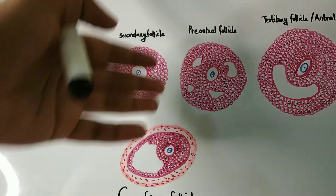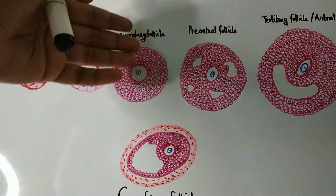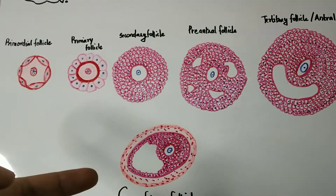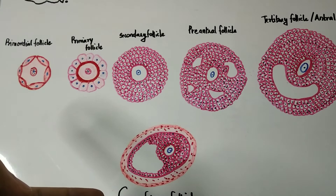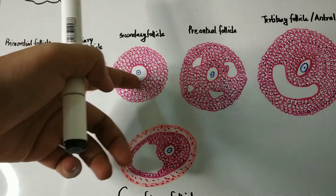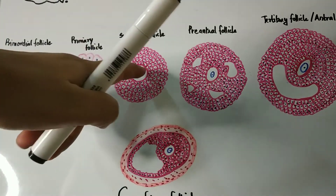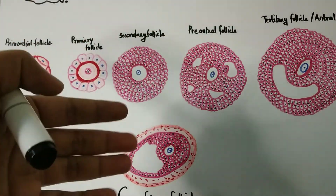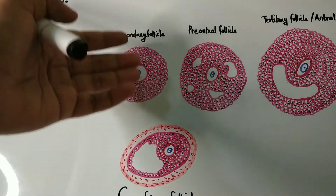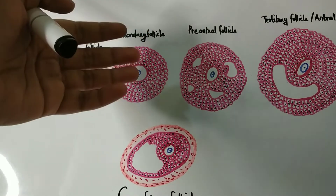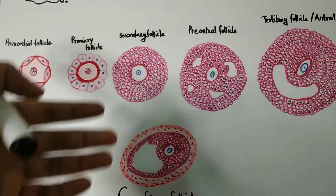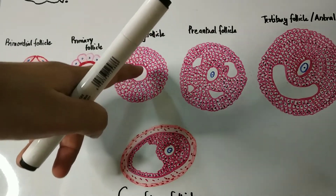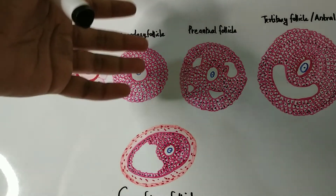In secondary follicles, more and more layers of granulosa cells are formed as the follicular cells undergo mitotic division. This is also called the stratum granulosa. The primary oocyte enlarges up to 40 microns, the nucleus becomes vascular, and the zona pellucida layer between the follicular cells and the primary oocyte is completely formed during the stage of the secondary follicle.